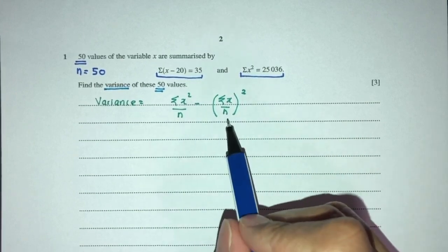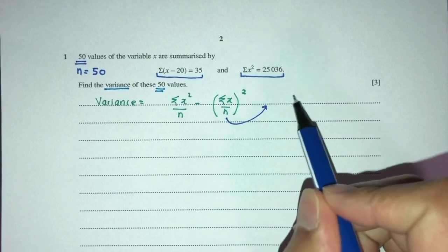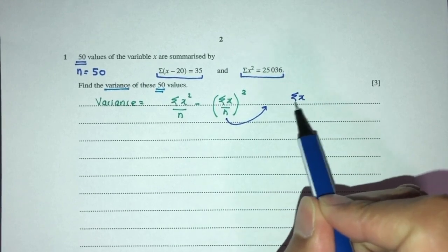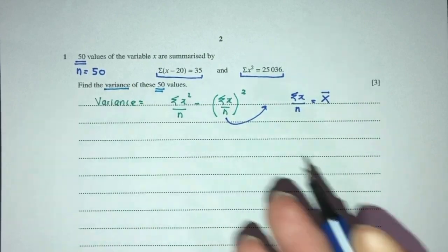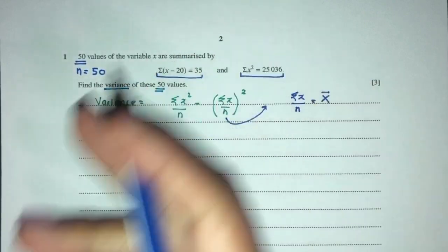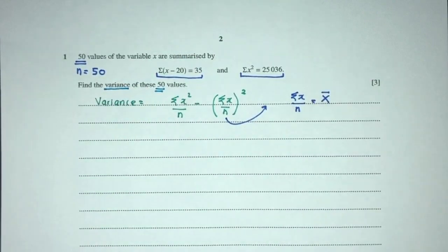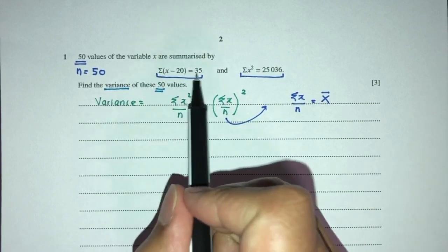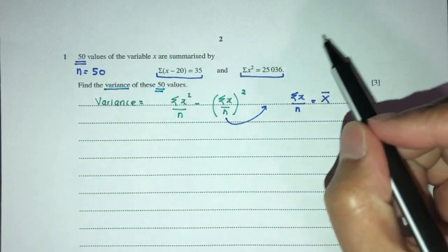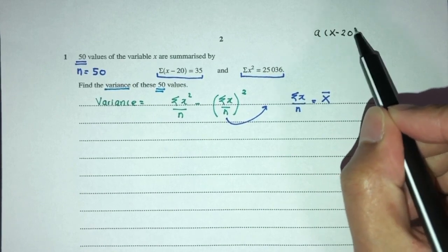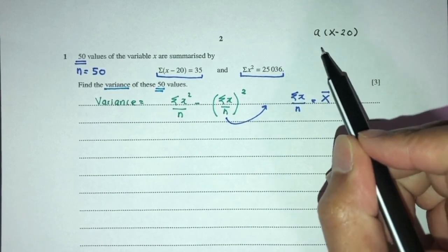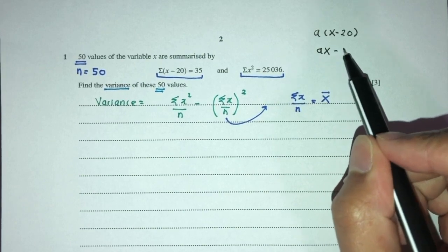Variance is equal to summation of x squared over n minus summation of x over n squared. We should know what is this? Summation of x over n is just the mean. Now we can find this using the given values, one by one. So first thing first, how can we break this down? If I tell you a times x minus 20, expand, how would you expand this? You will say, well, ax minus 20a.